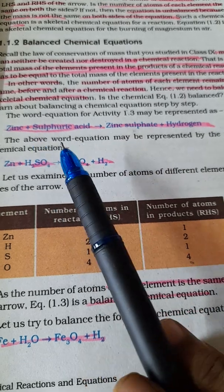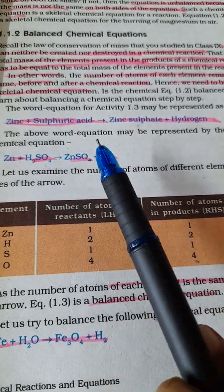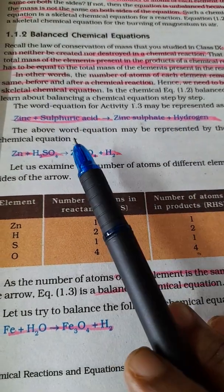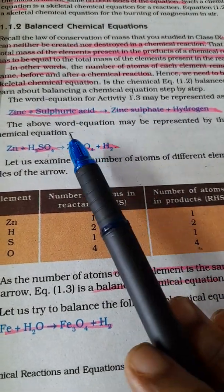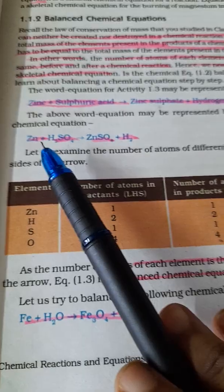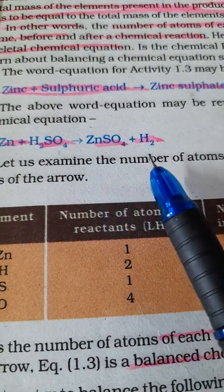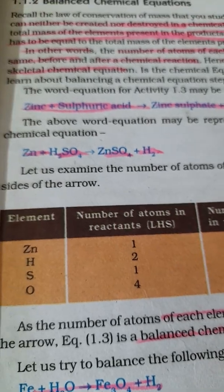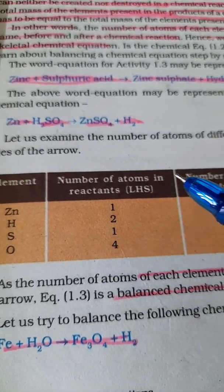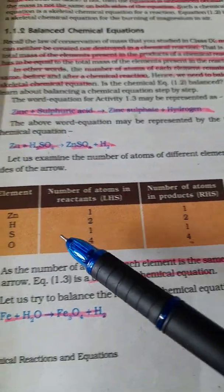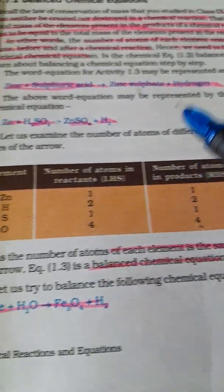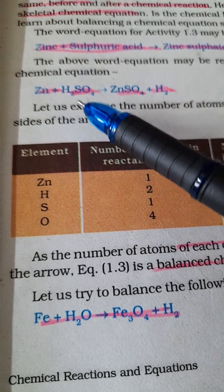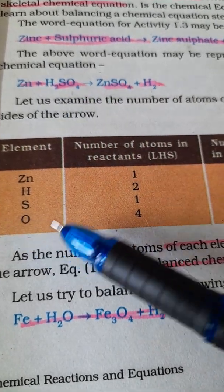We can write a word equation for the reaction: zinc plus sulfuric acid gives zinc sulfate plus hydrogen. Now write the same in the form of chemical equation: Zn plus H2SO4 giving ZnSO4 plus H2. Now check the number of atoms of each element. How many elements are there? Zinc, hydrogen, sulfur, and oxygen.